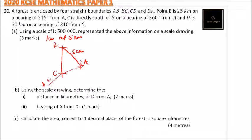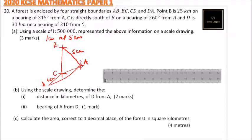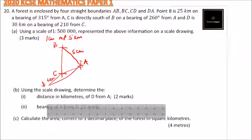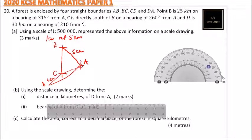You measure 6 cm for D and then join the line back to A, giving us points A, B, C, and D — that will be our diagram. To do this properly you need a protractor and a ruler.